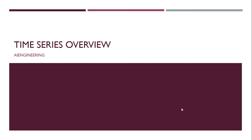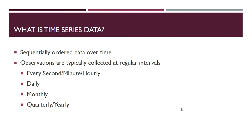So let's get started. What is time series? Time series is simply a series of data points ordered in time. When forecasting time series data, the aim is to estimate how the sequence of observations will continue in the future. The observations collected are typically at regular intervals — data can be collected every second, every minute, every hour, daily, monthly, quarterly, or yearly.